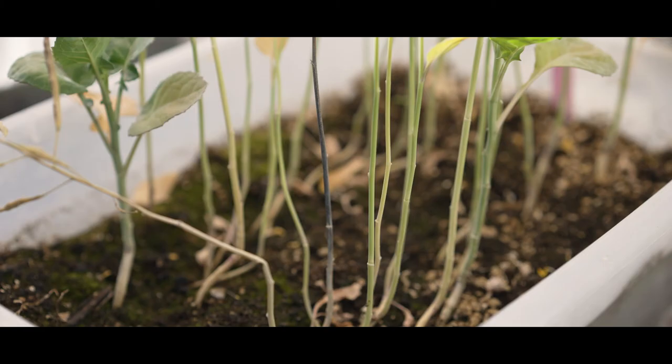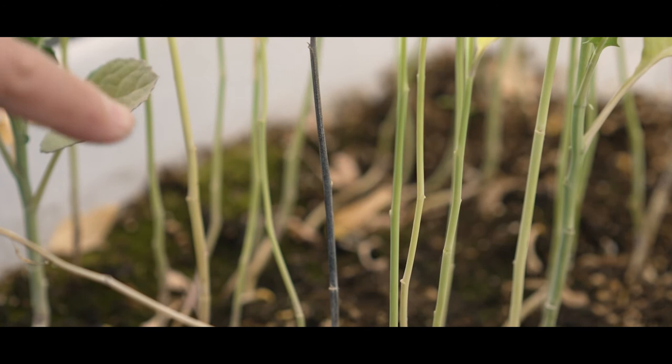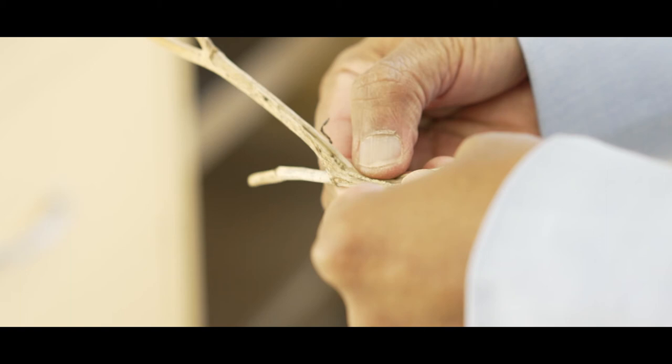As the plant begins to senesce, the pathogen moves from the xylem into the surrounding non-vascular tissues where multicellular microsclerotia are formed in the dying tissue.